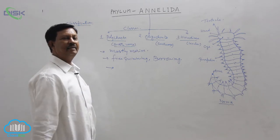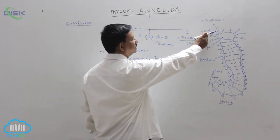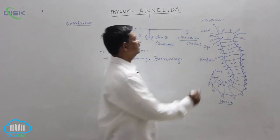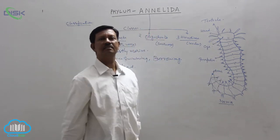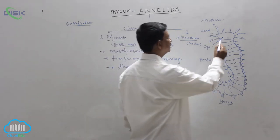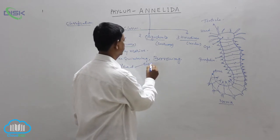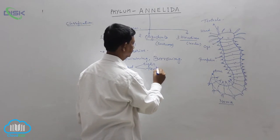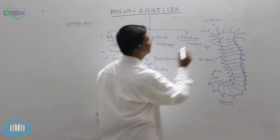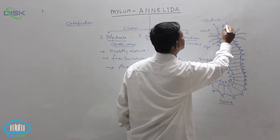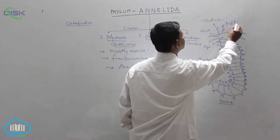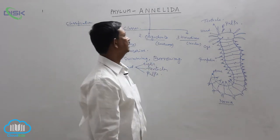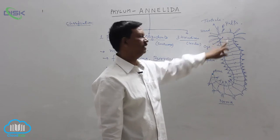At the anterior region, there is a distinct head present. In the head region, the important sensory organs are present like eyes and tentacles and palps. These important sensory organs are accumulated at the anterior region, which is known as the head region.